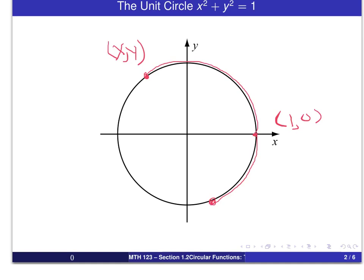Now, a very important thing to remember is the circumference of the entire circle. The circumference for a circle is equal to 2π times the radius. Since this circle has a radius of 1 — it is a unit circle — we get a circumference of 2π. So if we go all the way around the circle one time, we will have an arc of length 2π.